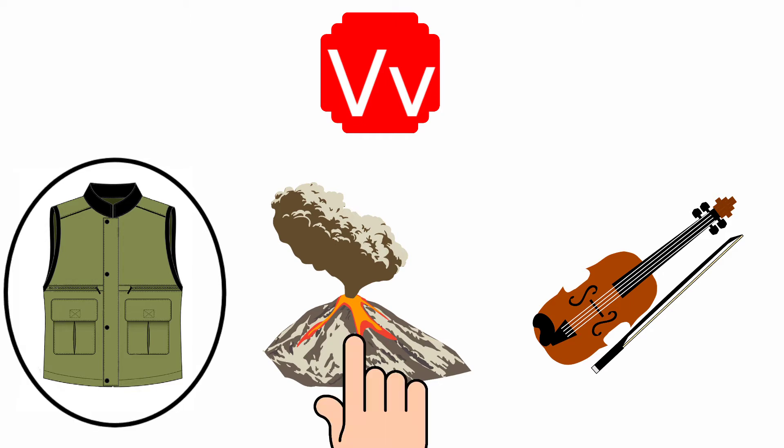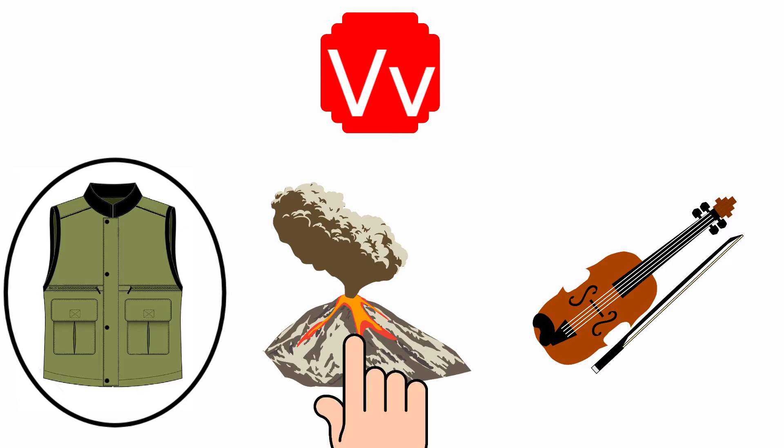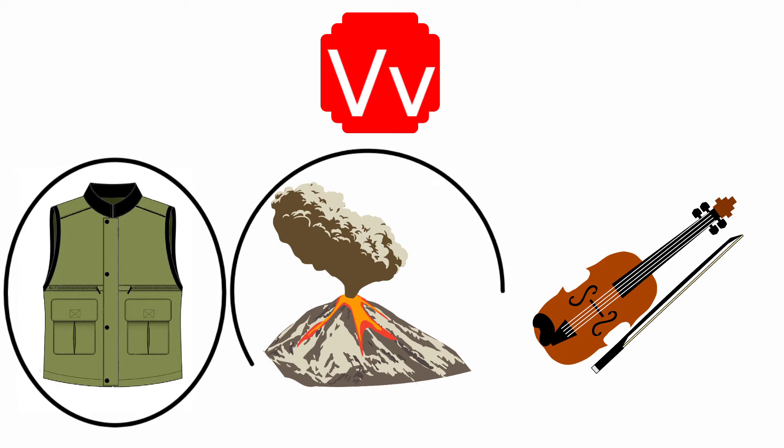Next one, Volcano. The beginning sound of the picture Volcano is V, and the sound of the letter V is V. The beginning sound of the picture Volcano and the sound of the letter V are the same. So, we are going to circle the picture Volcano.